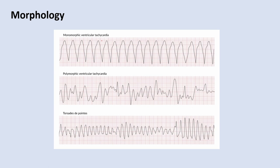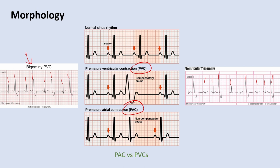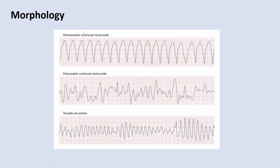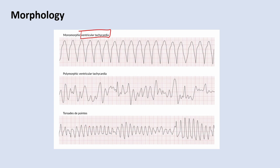Wide QRS tachycardias: if you get multiple PVCs in a row or a PVC triggers an arrhythmia, that's ventricular tachycardia, or V-tach. Polymorphic ventricular tachycardia occurs when PVCs come from different locations. Torsades de pointes is an undulating sine-like pattern that often occurs in patients with prolonged QT intervals when a PVC falls on top of the QT interval, precipitating this wide complex tachycardia.